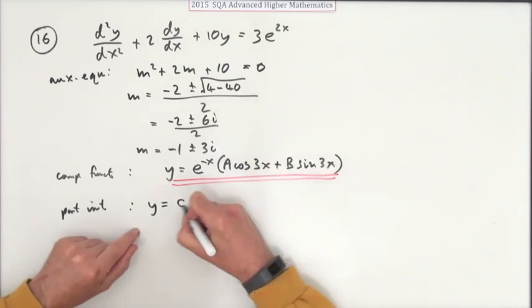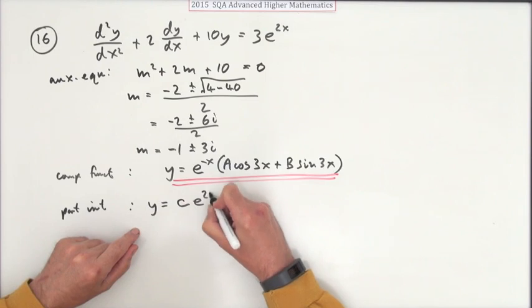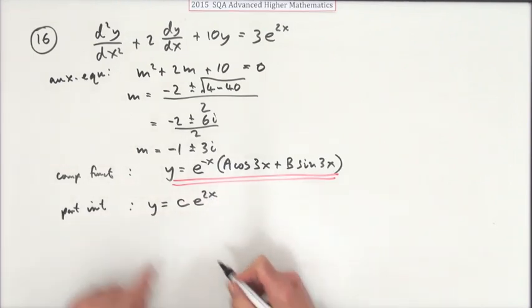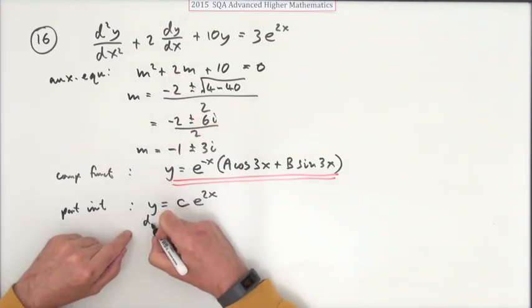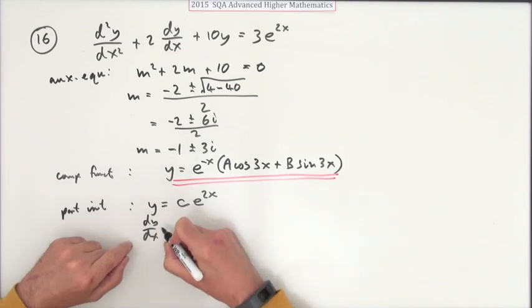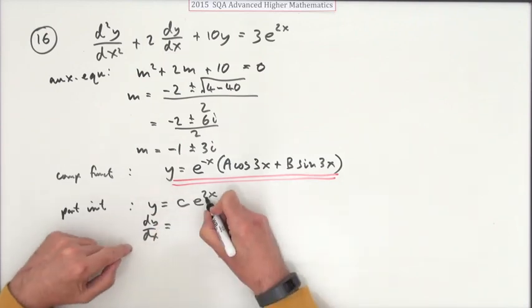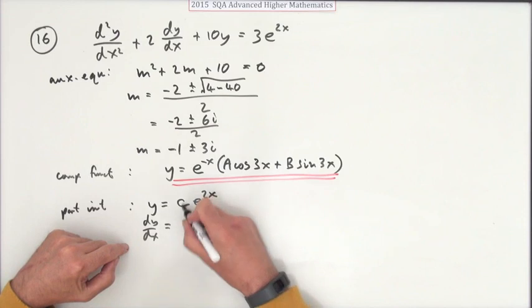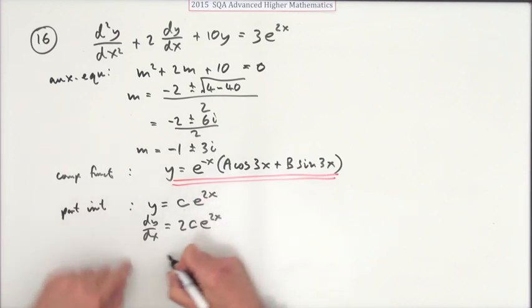So y equals something, c would do, e^(2x). So that means the first derivative dy/dx, or just y', takes up less room doesn't it, it's just going to be what it is only multiply by 2, so 2ce^(2x).